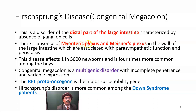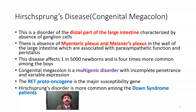The myenteric plexus and Meissner's plexus are associated with parasympathetic function. They form parasympathetic ganglia in the wall of the intestine, and only receive a minimum contribution from sympathetic fibers. These are mostly parasympathetic and are associated with peristalsis of the intestine.